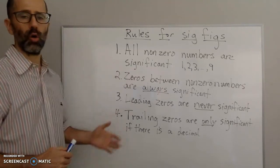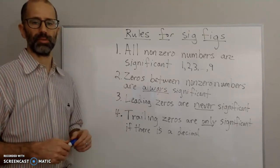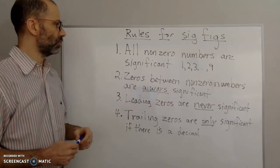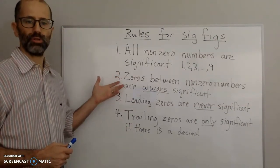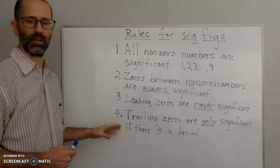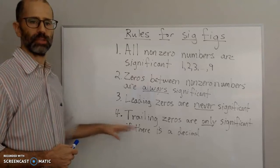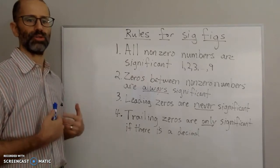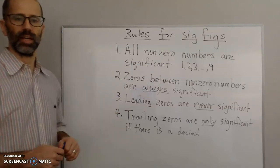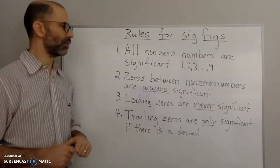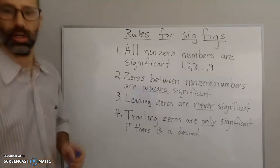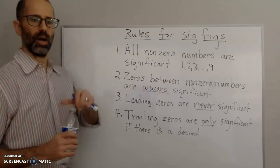I'm just going to go over the rules and do some examples to illustrate each of the rules. You might be used to seeing five rules here, or seeing the fourth rule split up into A and B. I don't do that — I make it more simplified, and I'll explain towards the end why I do that. And I'll show you some examples.